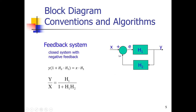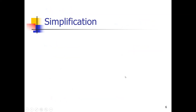One remark: when the summation was a plus instead of minus, then this denominator should be a minus. You can calculate it yourself by doing the mathematical relations we discussed. H1 times H2 is called the loop transfer function, the open loop transfer function, also called the loop gain.